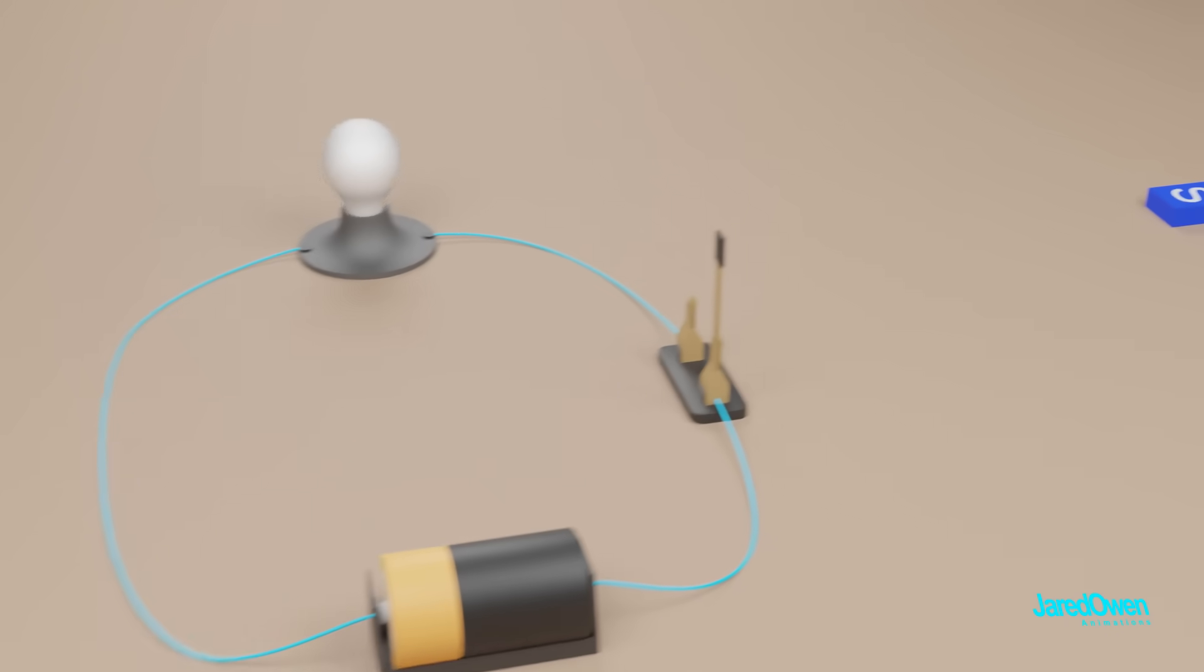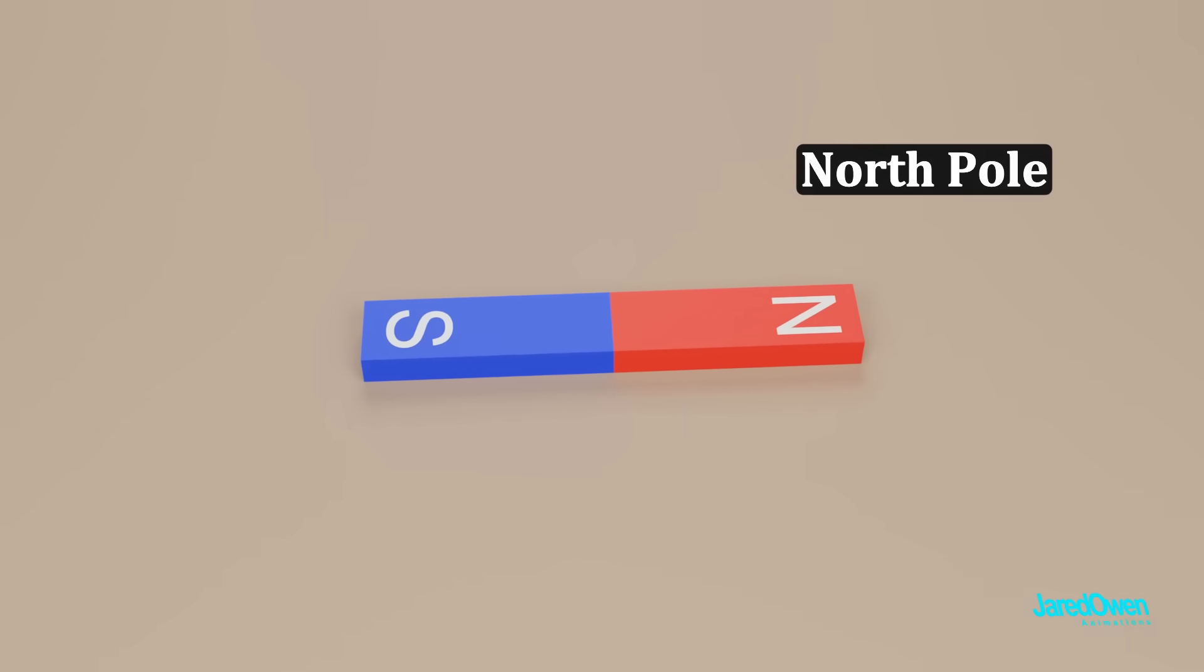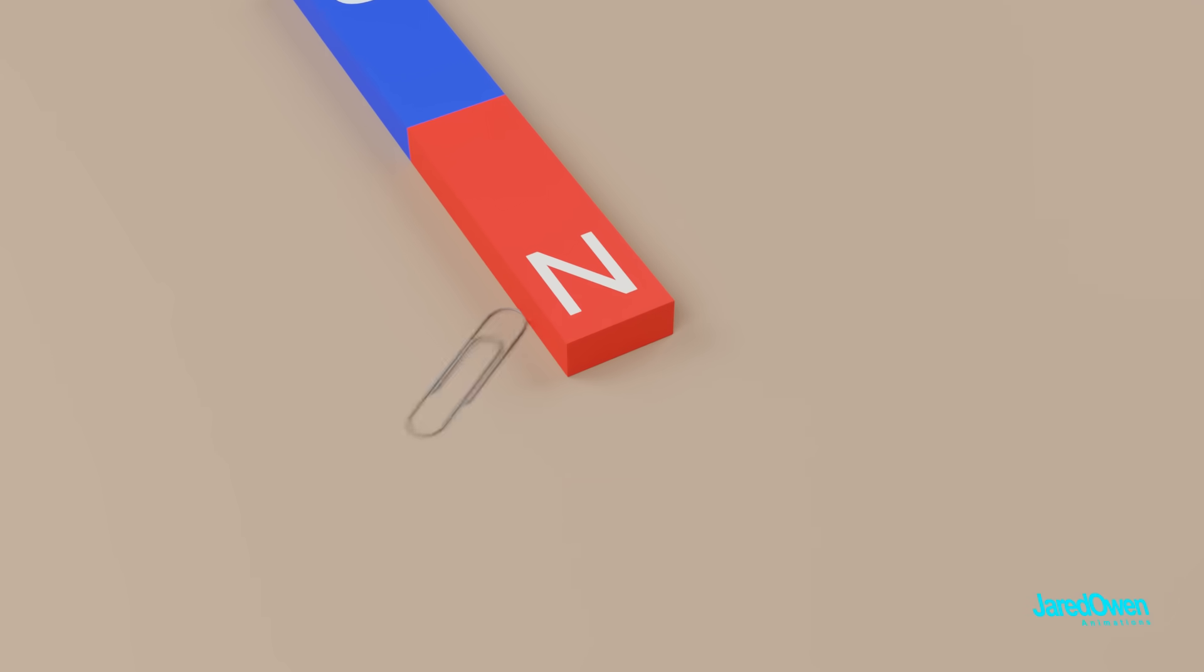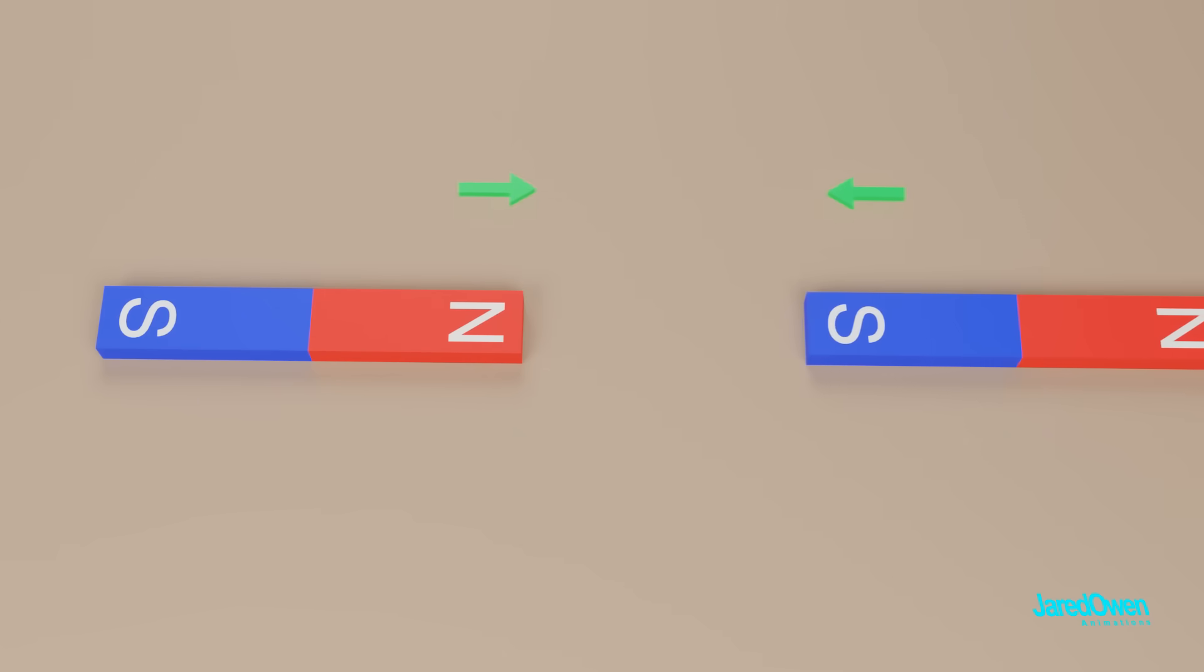Now let's come over here. This is a magnet. It has a north pole and a south pole, and it likes to attract other metal objects like these paper clips. If you bring another magnet towards it, opposite poles attract and the same poles repel.